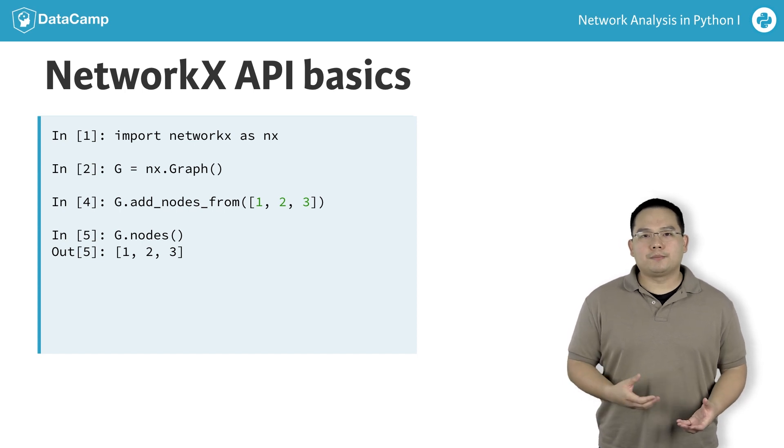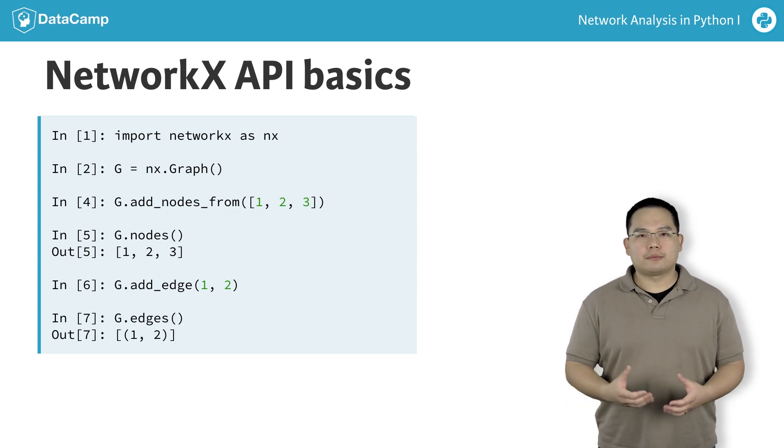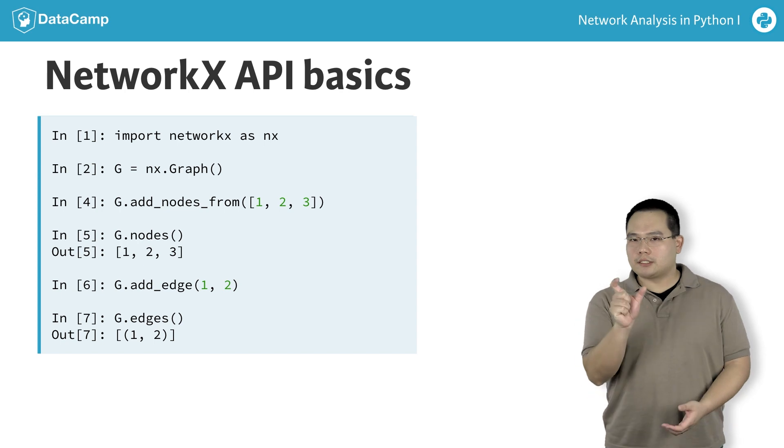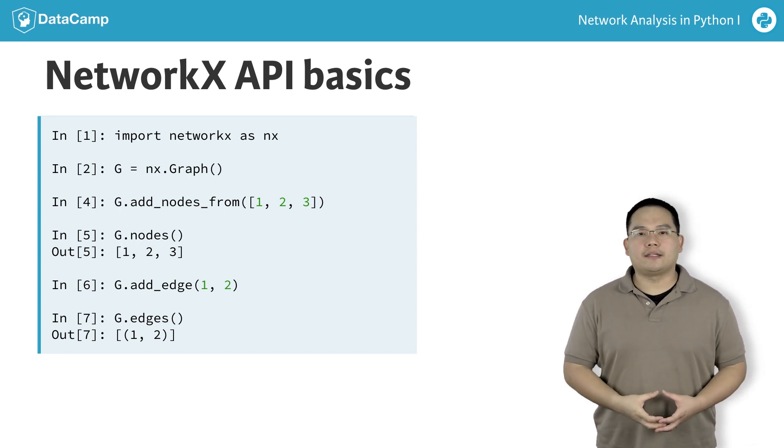If we add an edge between the nodes 1 and 2, we can then use the g.edges method to return a list of tuples which represent the edges in which each tuple shows the nodes that are present on that edge.